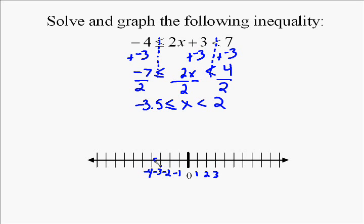Again, this reads x has to be greater than negative 3.5, so to the right of negative 3.5, but less than two, so to the left of two. And that has to be both because it's an AND inequality, thus we shade in between the two cutoff points.